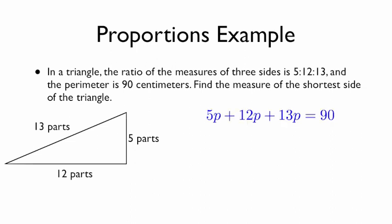If we want to find the measure of the shortest side, we need to figure out how long is 1 part. We know all the sides add up to 90 centimeters, so 5 parts plus 12 parts plus 13 parts equals 90. Solving that, we get that 1 part equals 3 centimeters. Therefore, if we substitute p equals 3, we get that the short side here is 15 centimeters long.